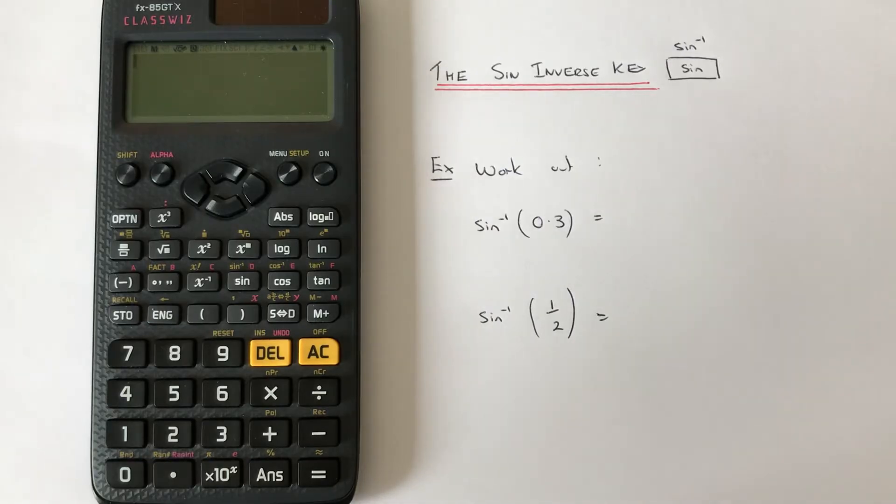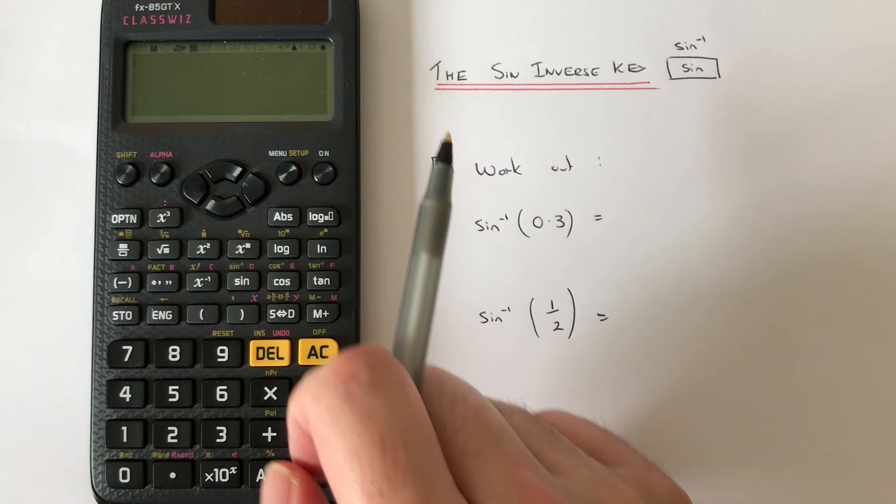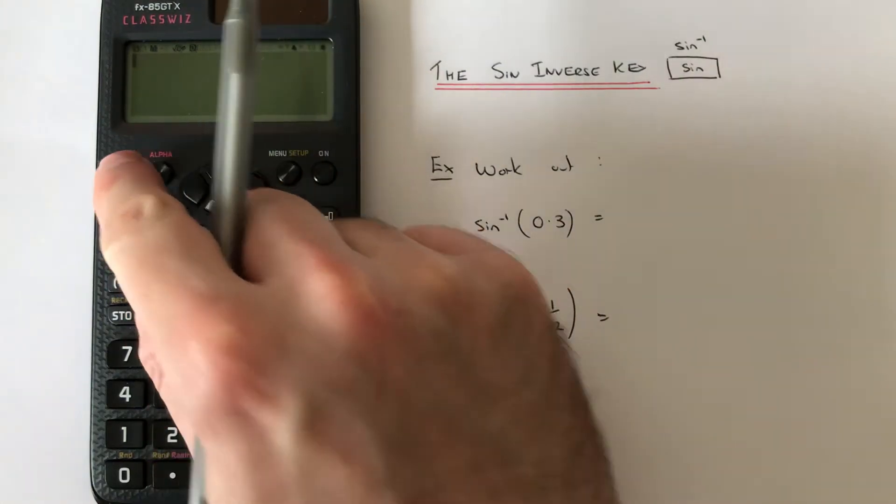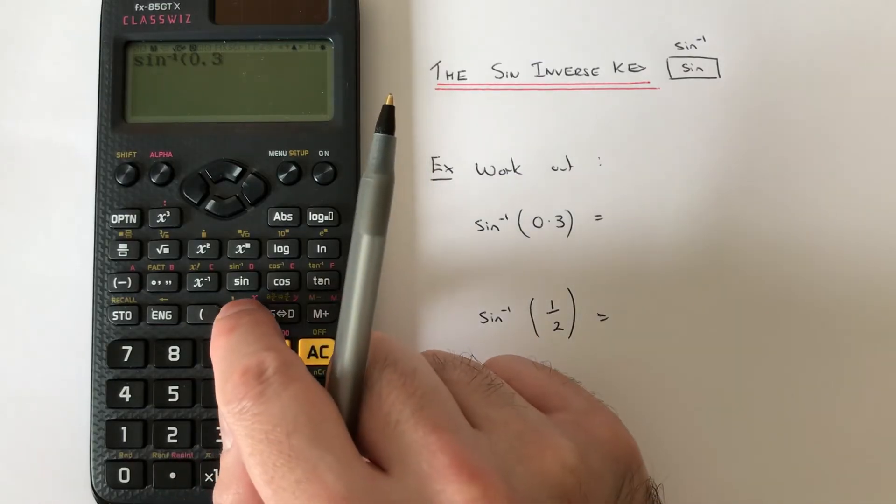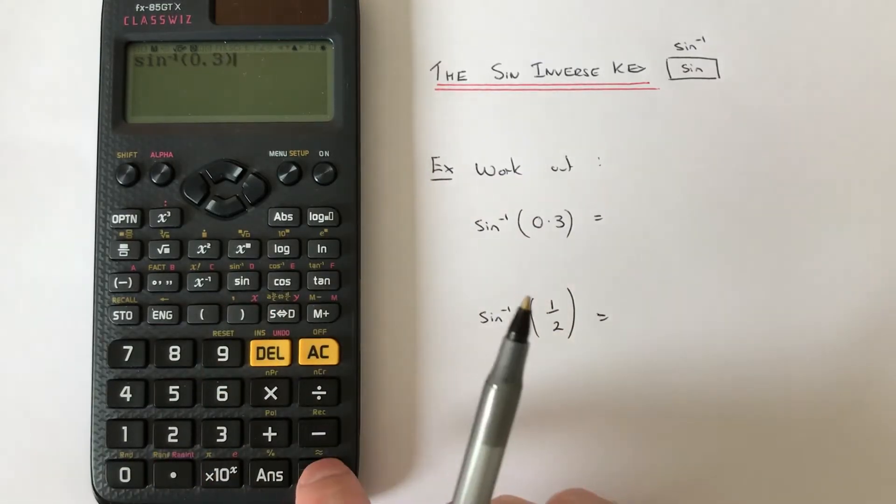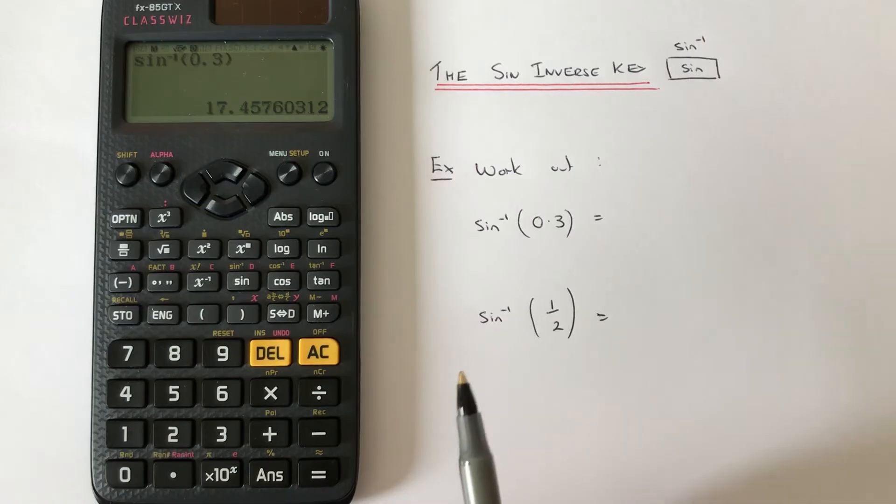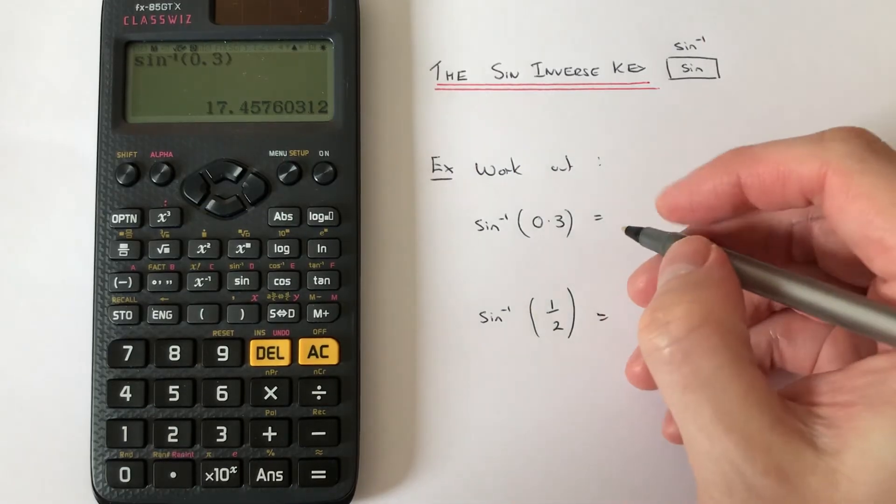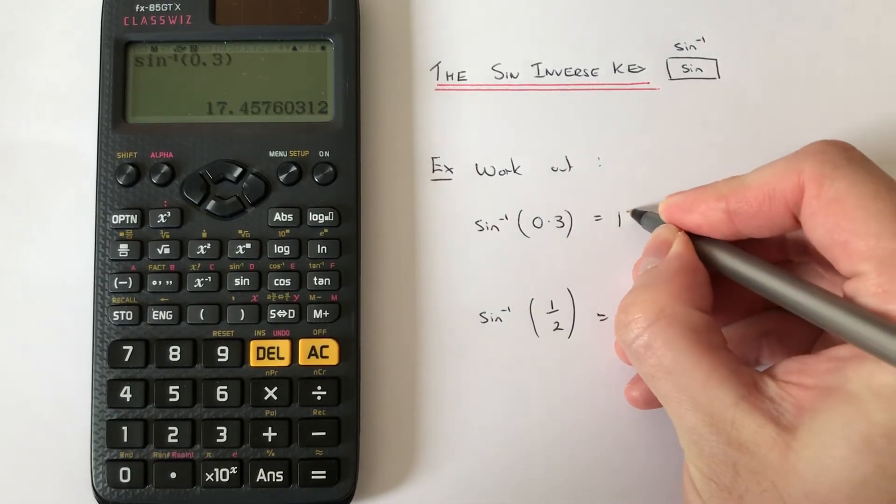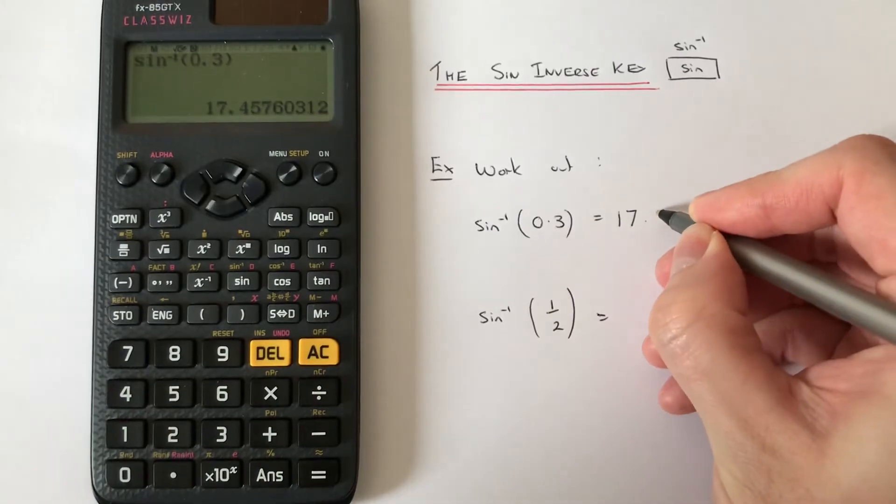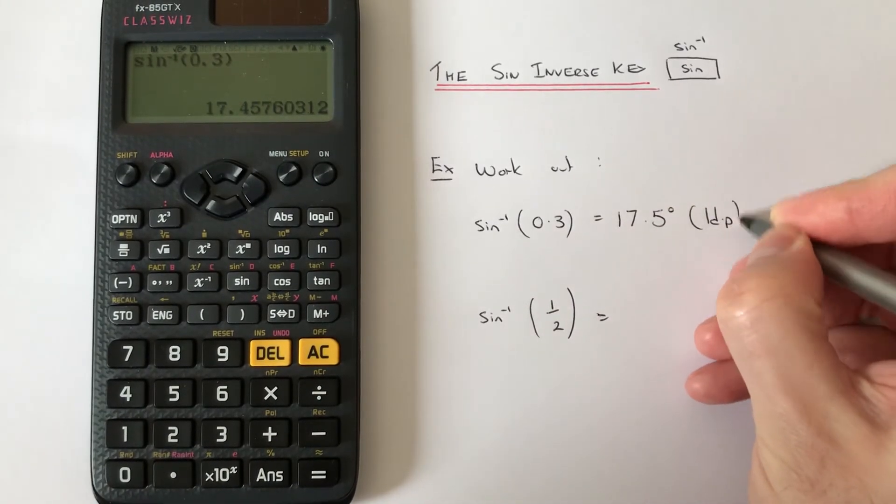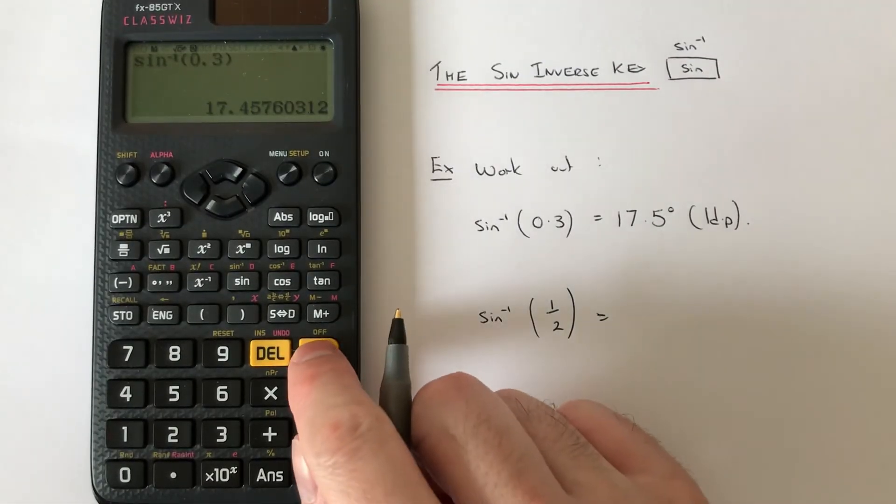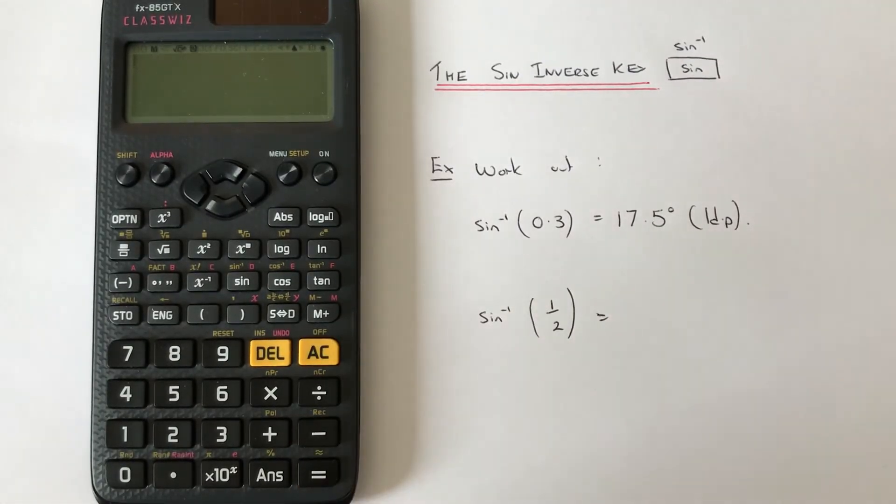We've got to work out sin inverse of 0.3, so press shift sin, 0.3, close your bracket at the end. What it does is it converts that decimal into an angle and we get an answer of 17.5 degrees to one decimal place. Let's have a look at one more example.